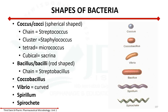The shape of bacteria can be classified based on their shape into: Cocci, Bacillus, Coccobacillus, Vibrio, Spirillum, and Spirochetes. For cocci — it is a round shape. Coccus is the singular form and cocci is the plural form.